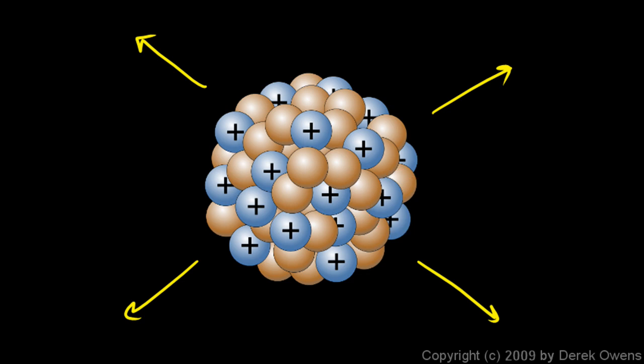Because the large nucleus is too big for the strong force, which is very short-range, to be very effective. So every element over element number 83 is radioactive. Every element above element number 83 has a nucleus that's big enough to spontaneously break apart.